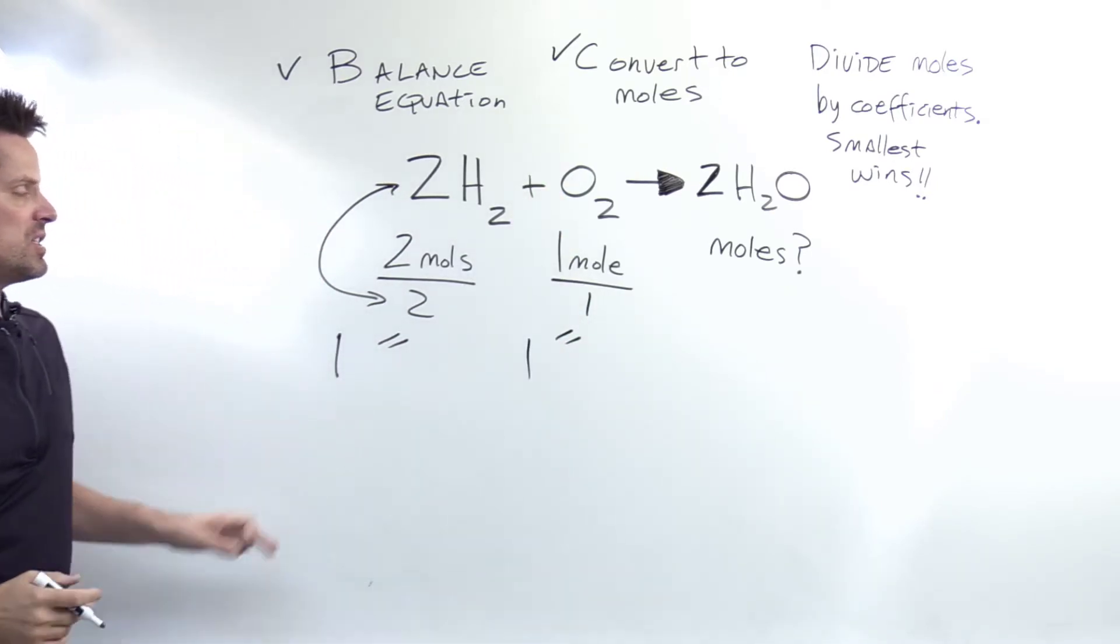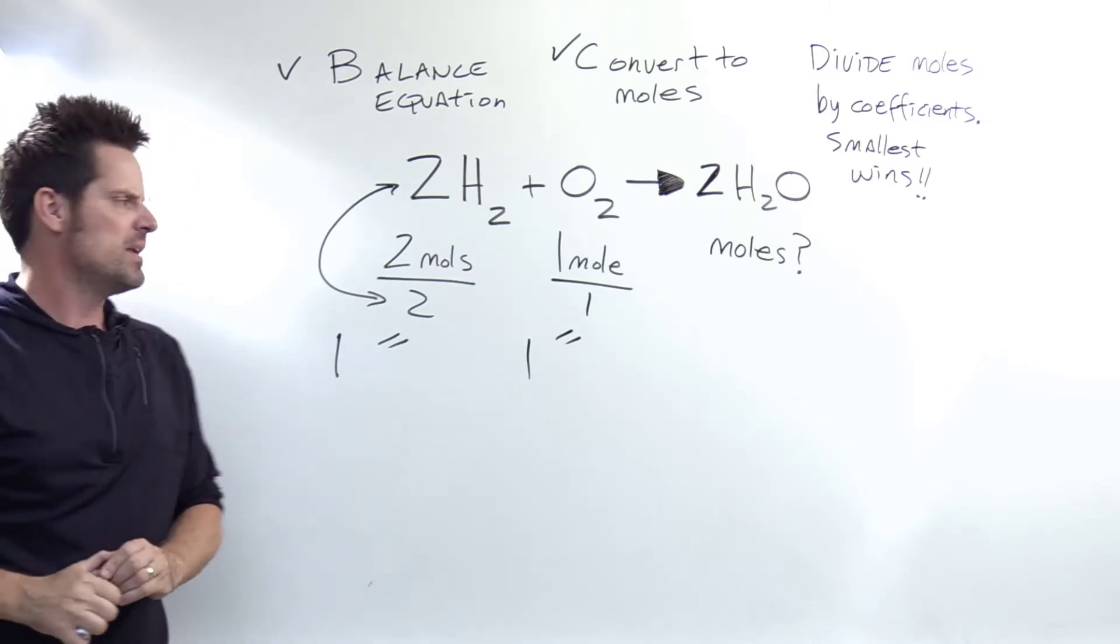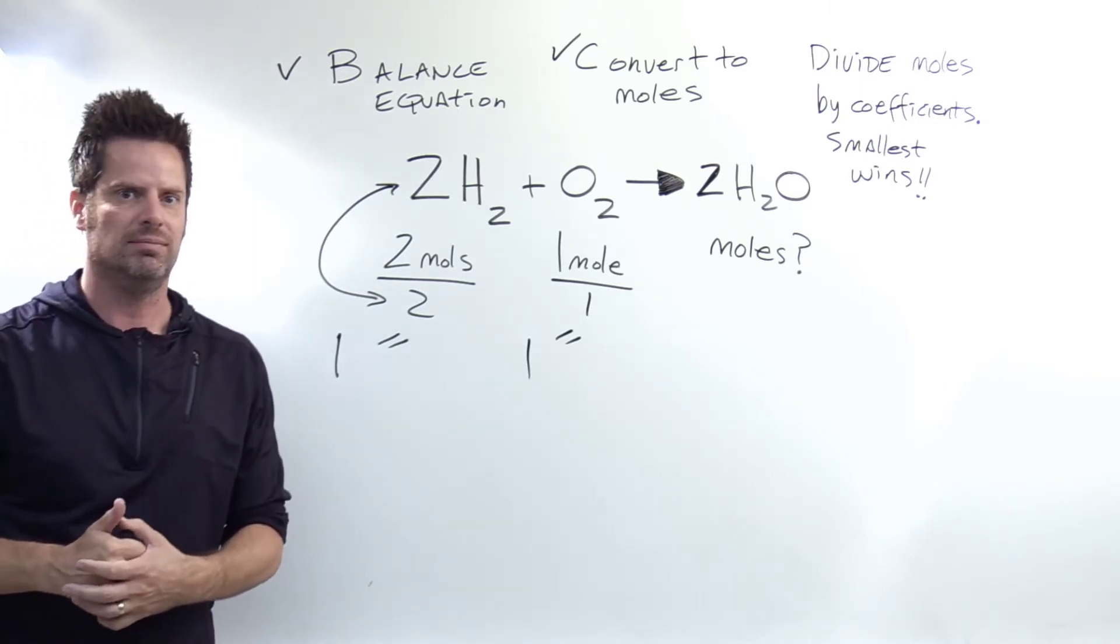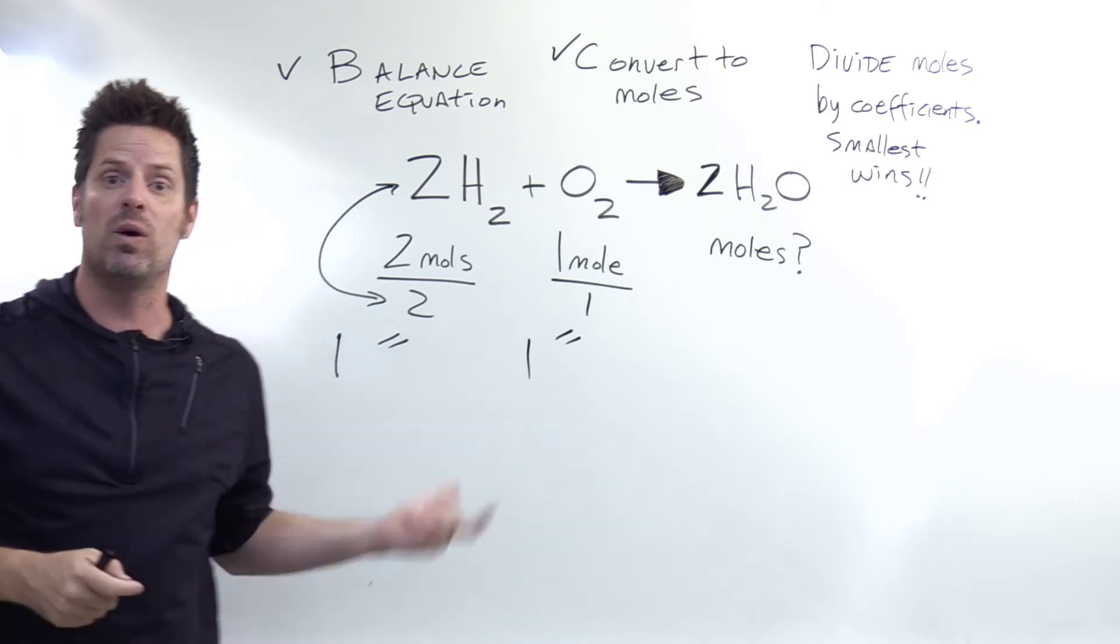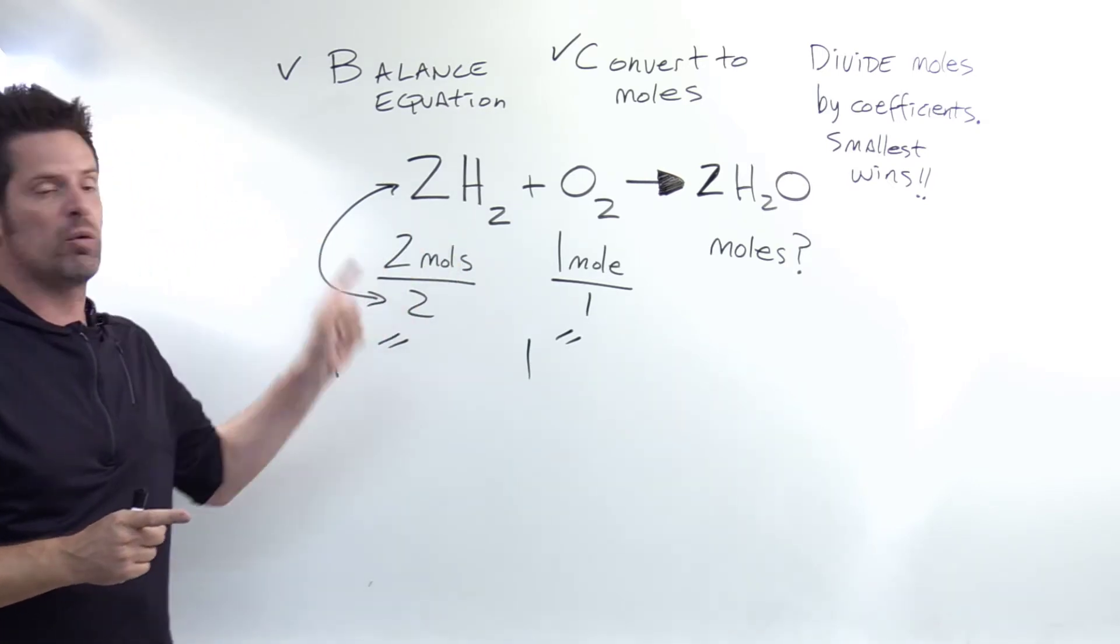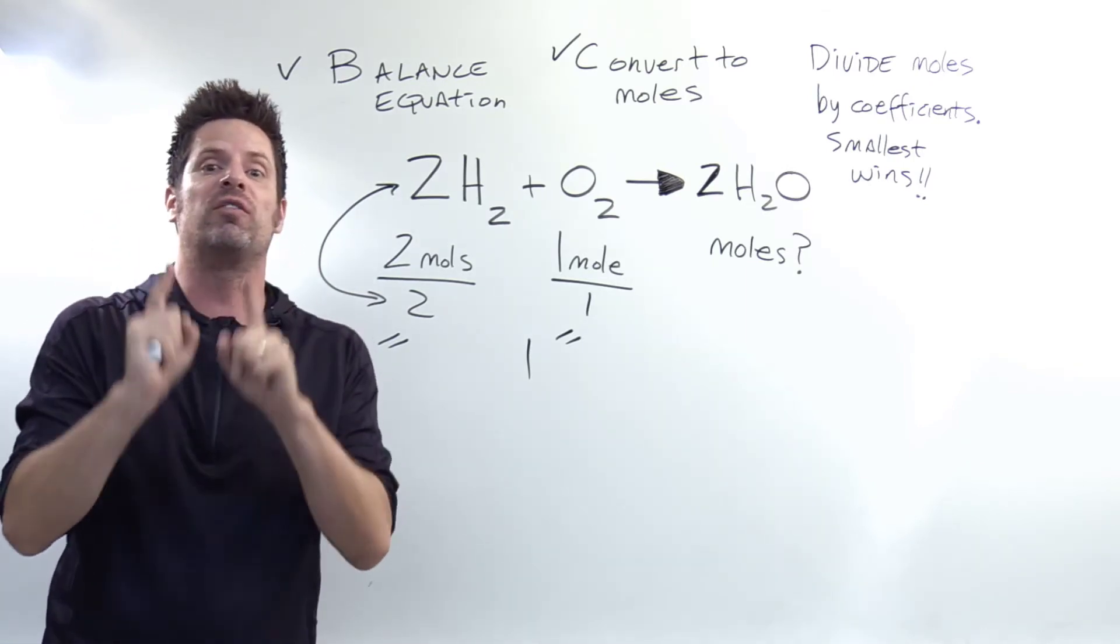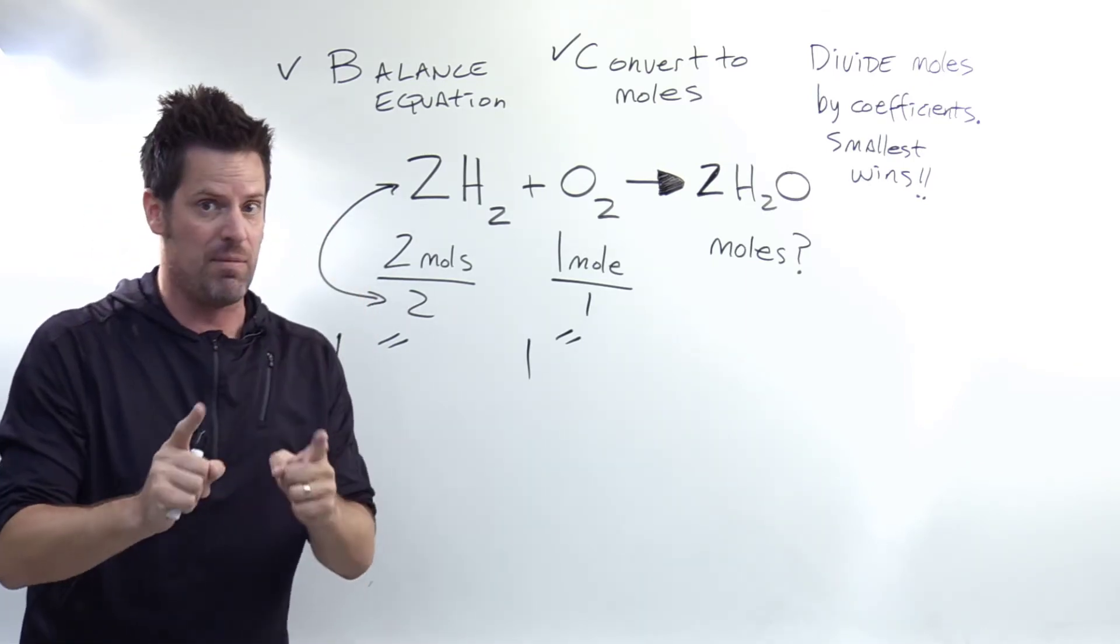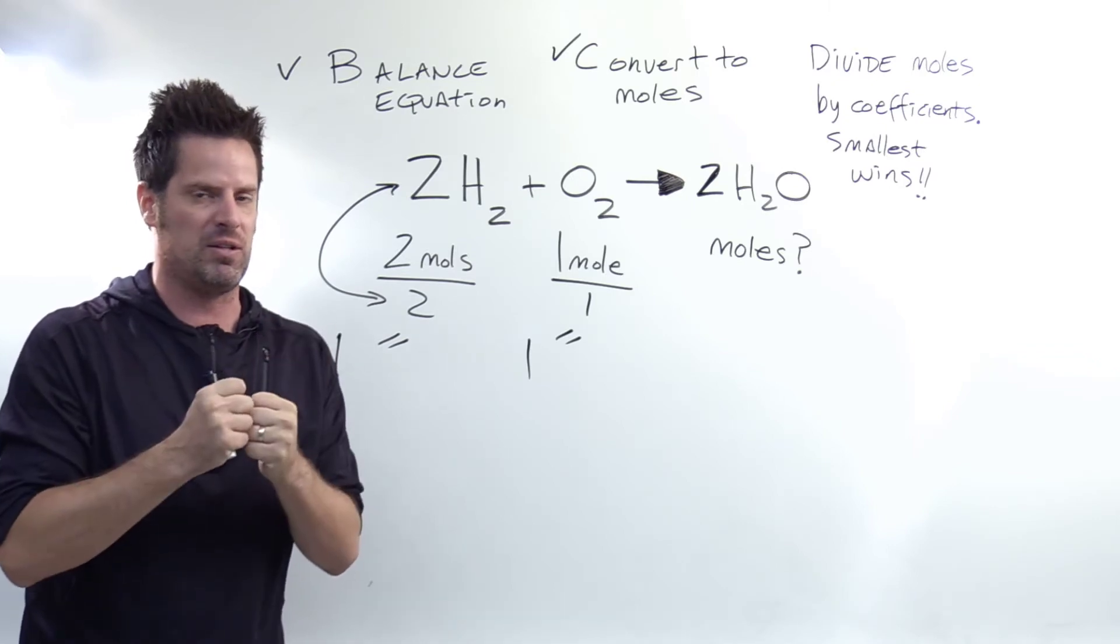So the smallest of these is the limiting reactant. So which one's smaller, one or one? Yeah, you can see they're exactly the same. So what do we do? Well, this is one of those rare circumstances in which we've added both of the reactants, the H2 and the O2, in the exact perfect amounts to where both of them are limiting, the exact perfect amounts.